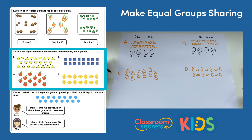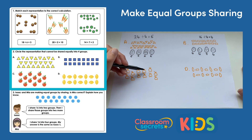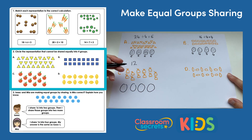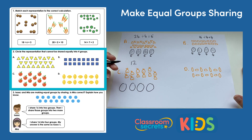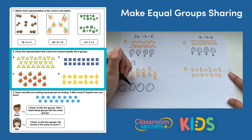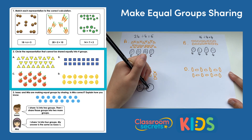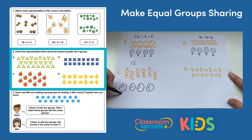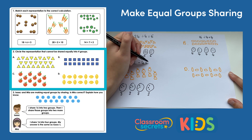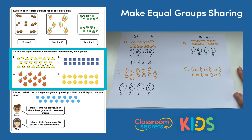Let's move on because we're looking for the one we can't share. C — the apples. Counting them up: twelve. We've got twelve and we're going to share them into four groups. I can see there are three in each group and the groups are equal, so we can also share that one equally. So that leaves us with D — the lemons.